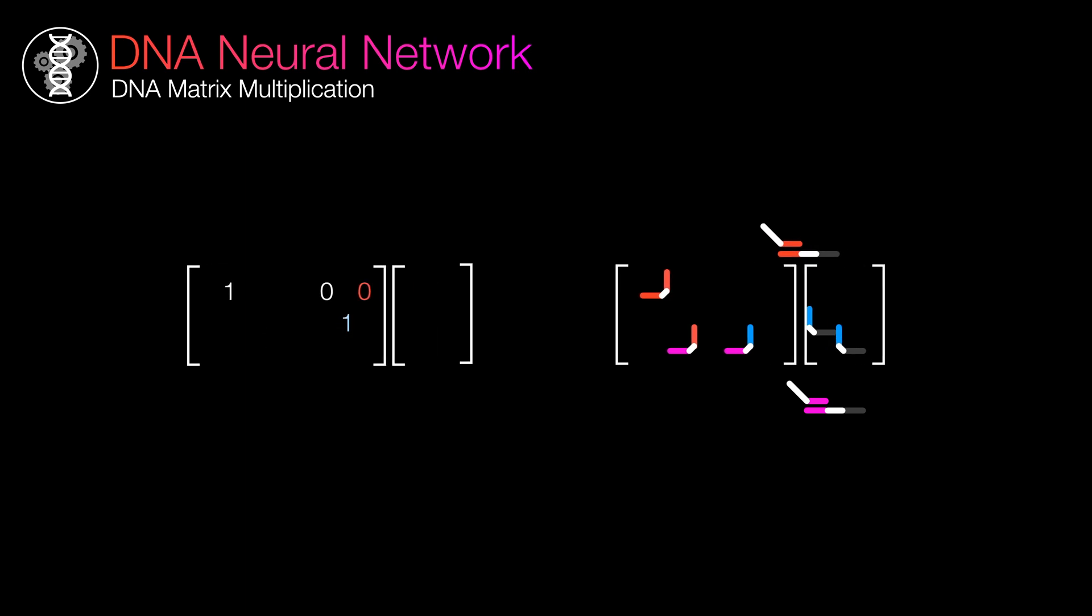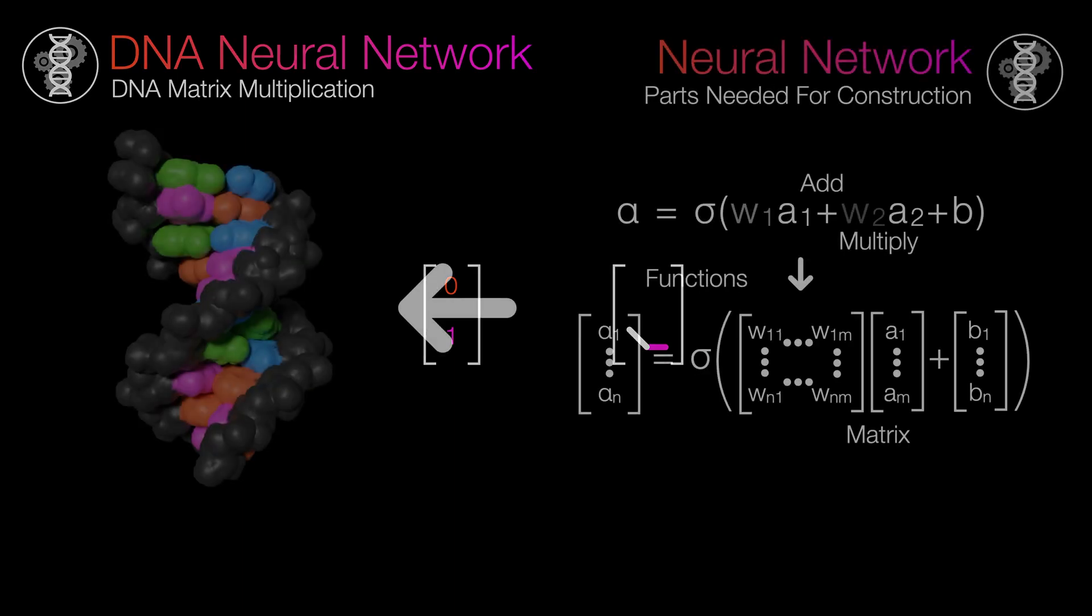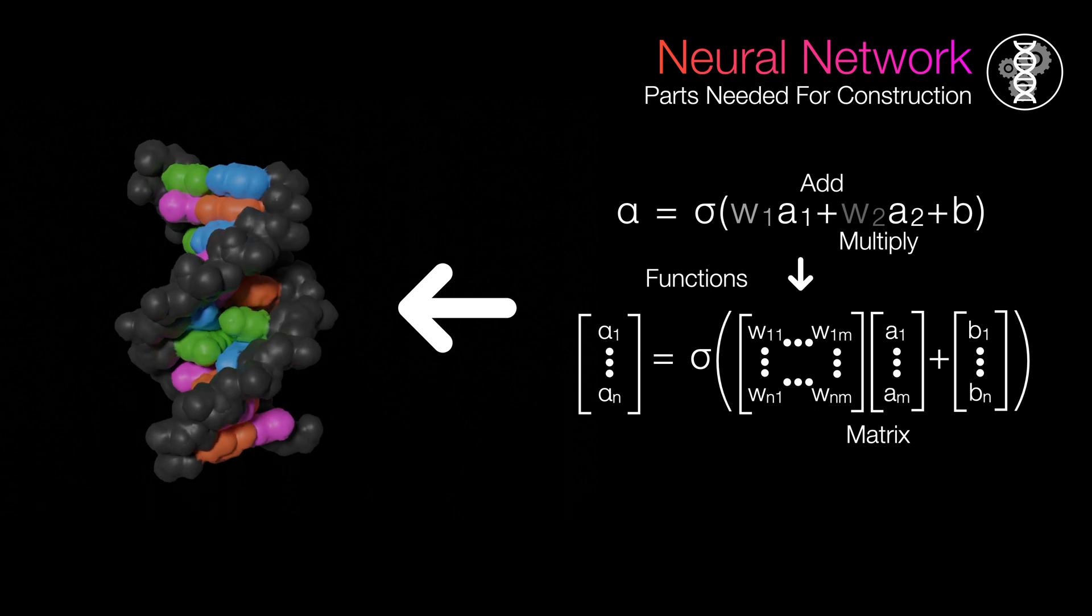So, let's try multiplying this matrix with this vector for demonstration. And as you can see, the DNA results match that of the Boolean calculation. And that's it!